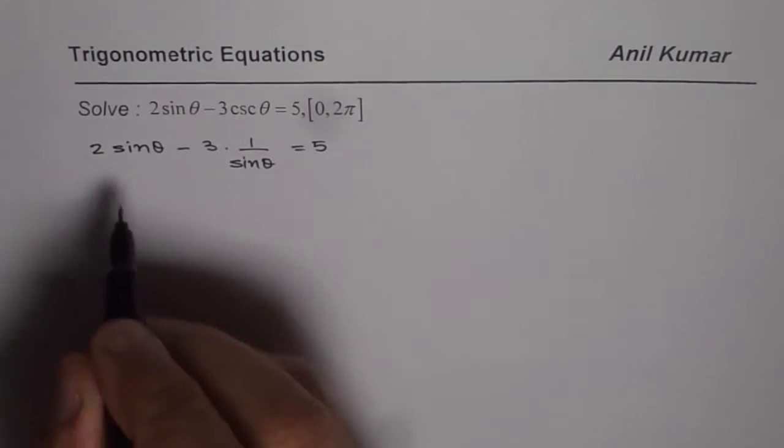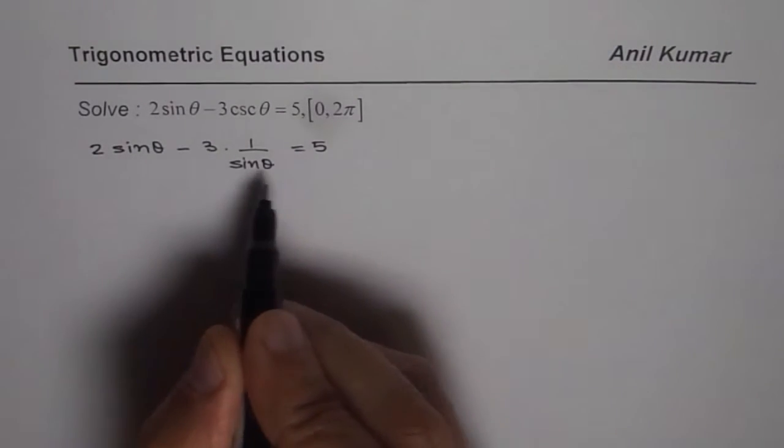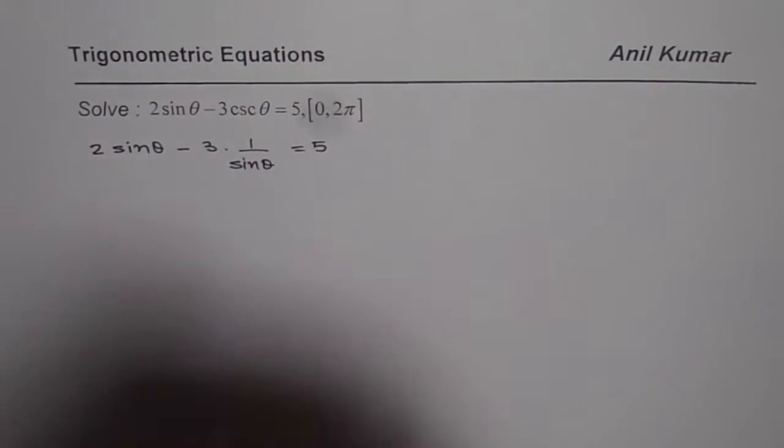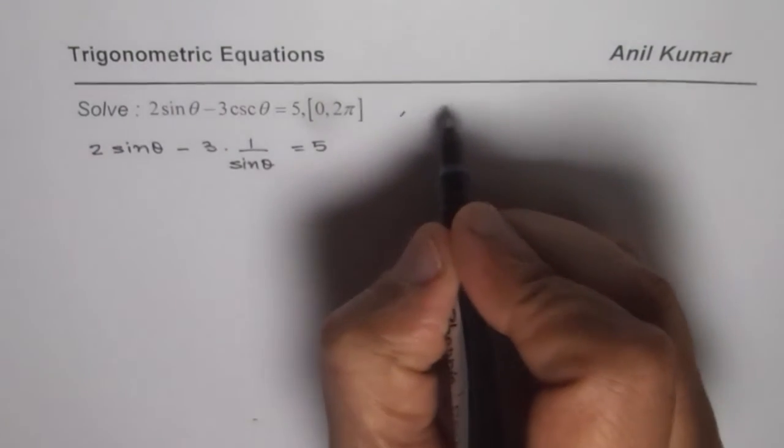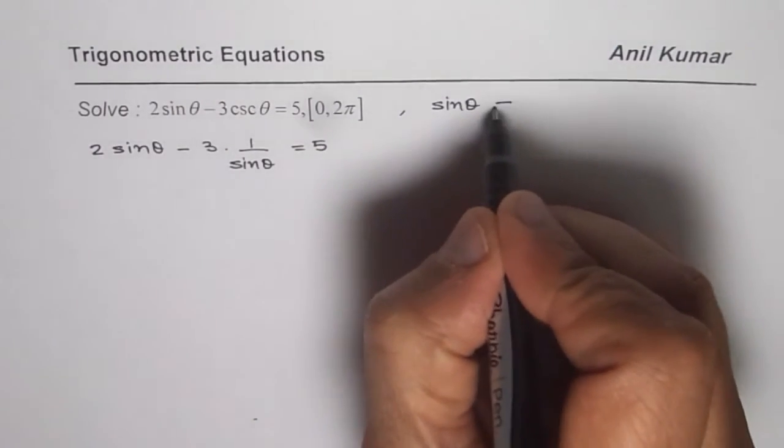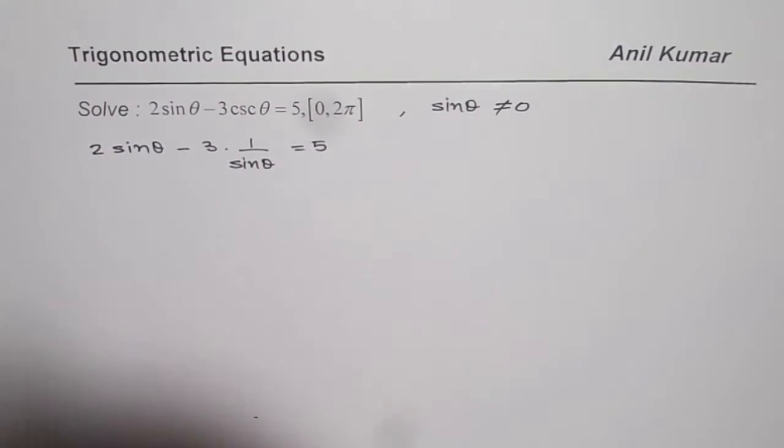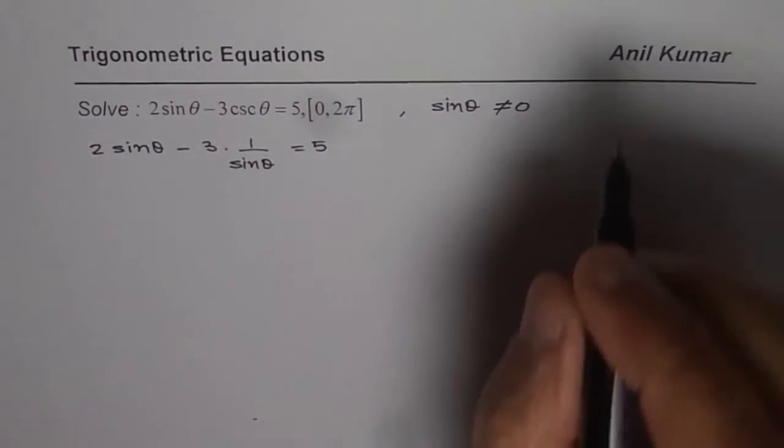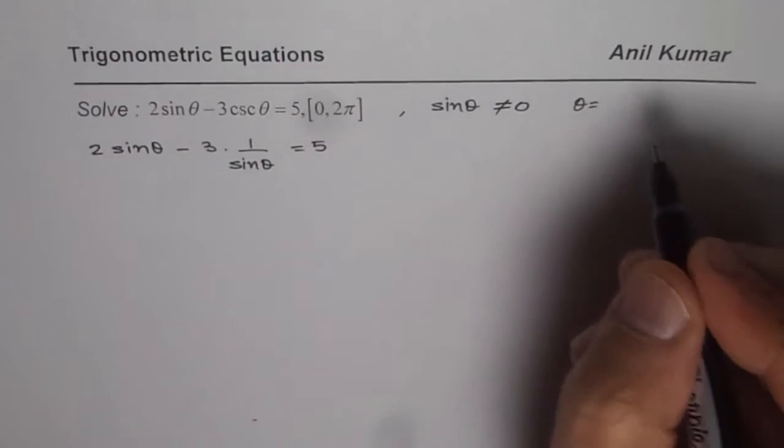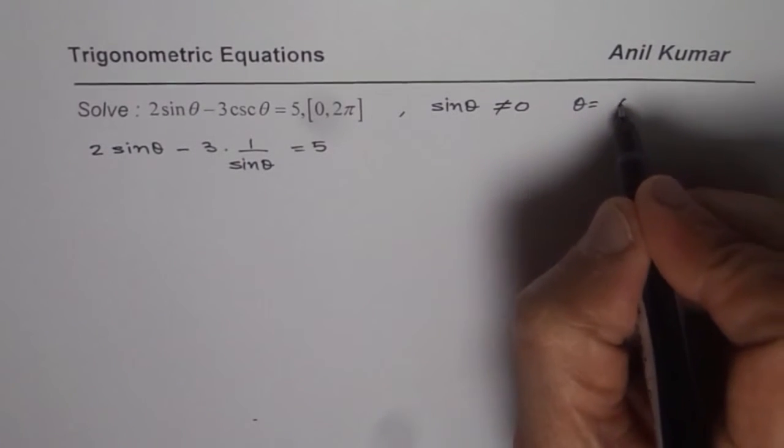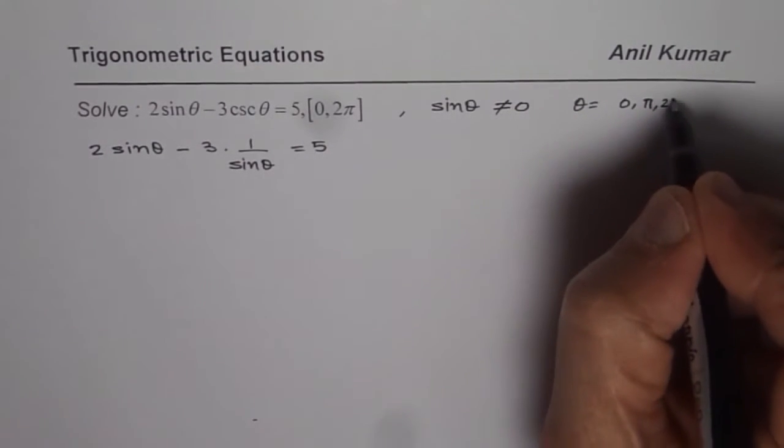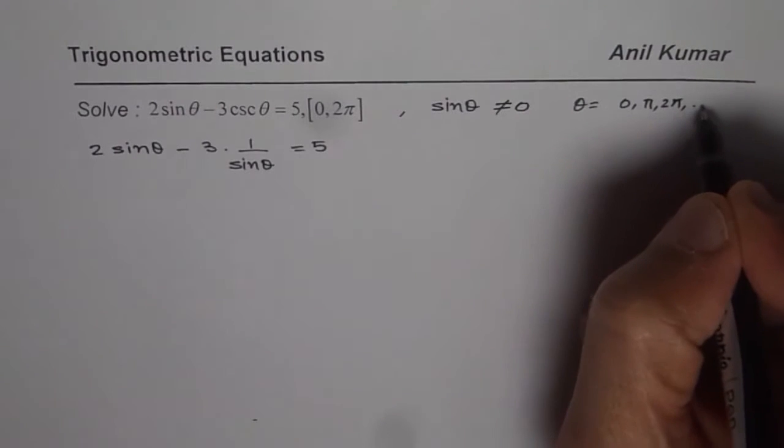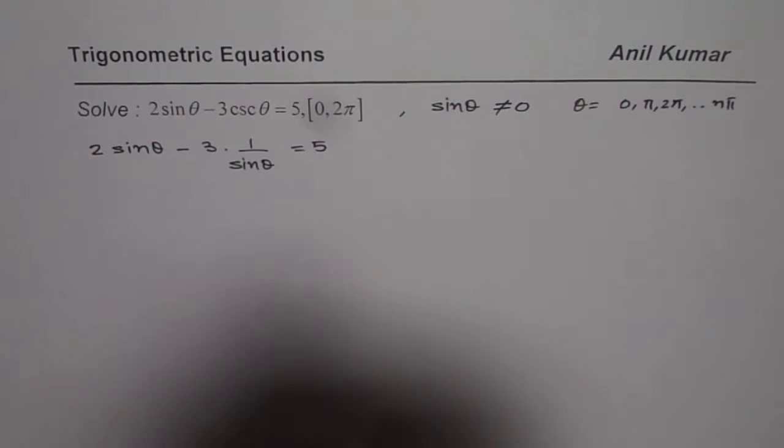And now we can multiply each and every term by sin theta. Remember we do have restrictions now that sin theta cannot be equal to 0, since it is in the denominator. That means we are eliminating values like theta equals to 0, pi, 2 pi, I mean I should say n pi from our solution.